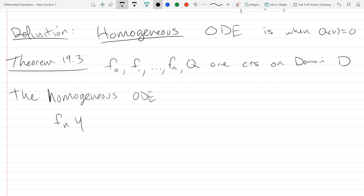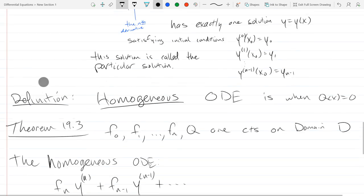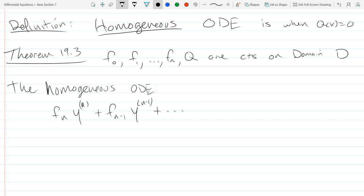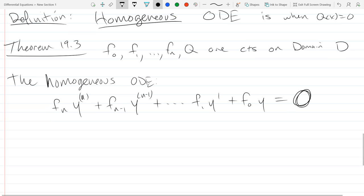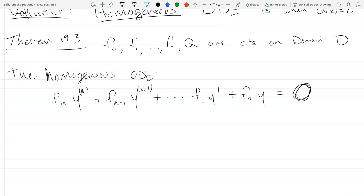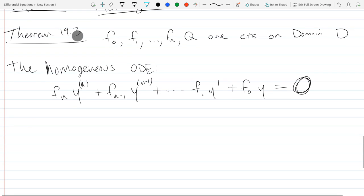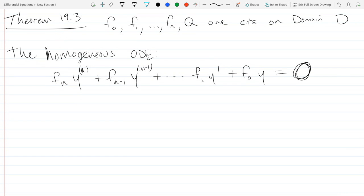So this is the same one we looked at before. This will be F n, Y nth derivative, F n minus 1, Y n minus first derivative. Plus F1 Y prime, plus F zero Y equals, now this is the important part, zero on the right side. That's what makes this homogeneous. Everything that's got no y's or y primes is zero. So this homogeneous ODE has N linearly independent solutions.